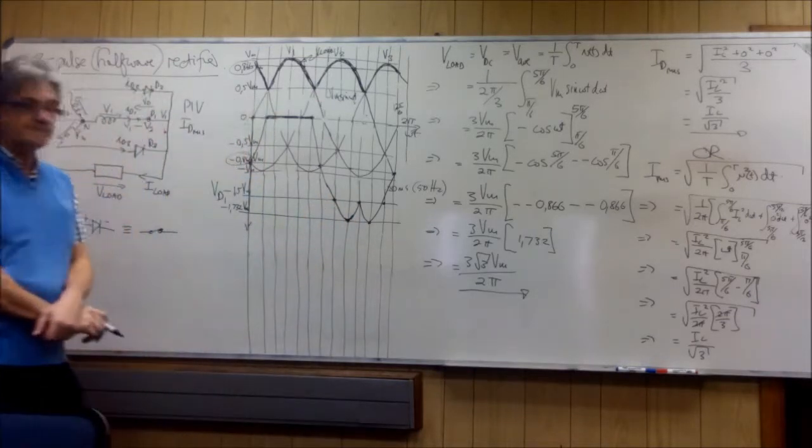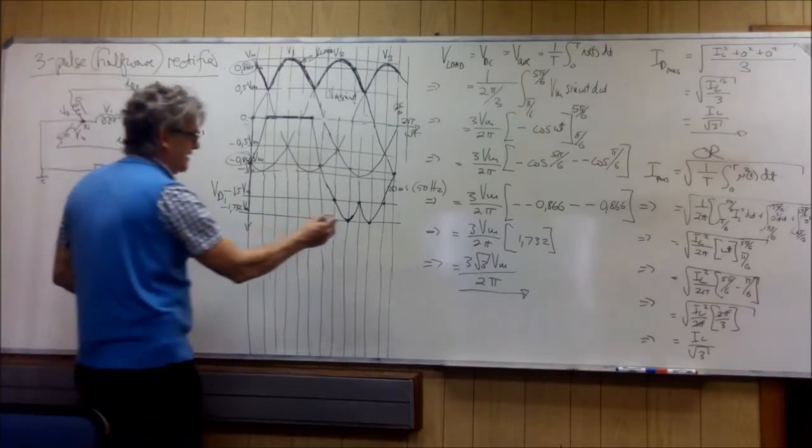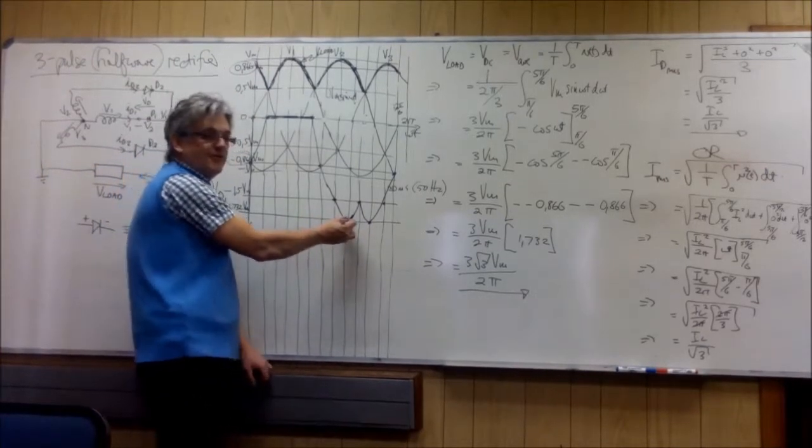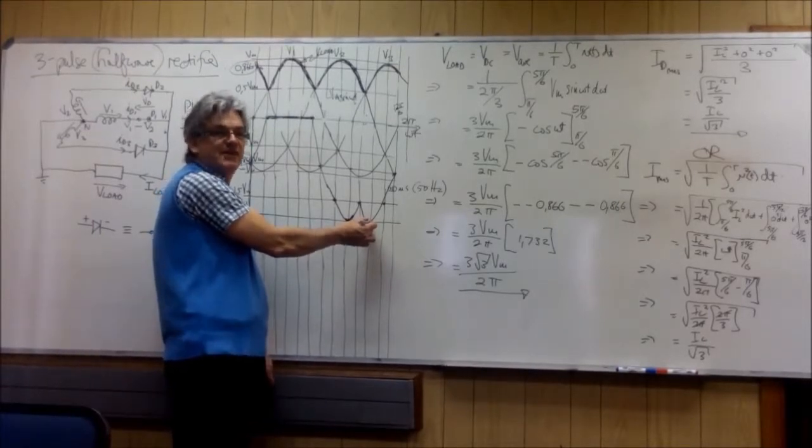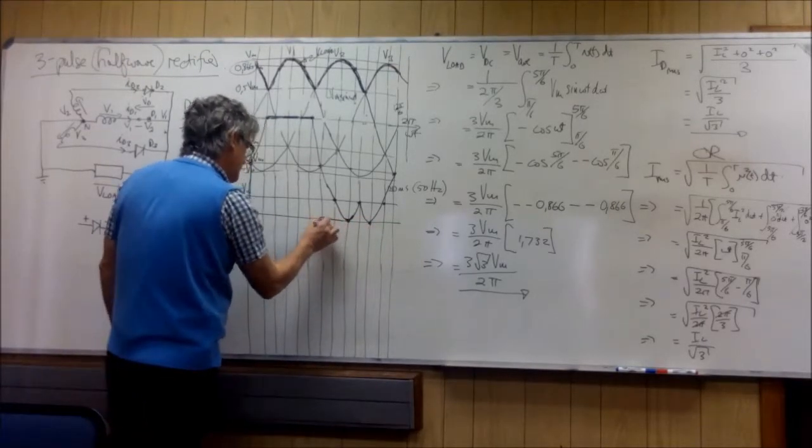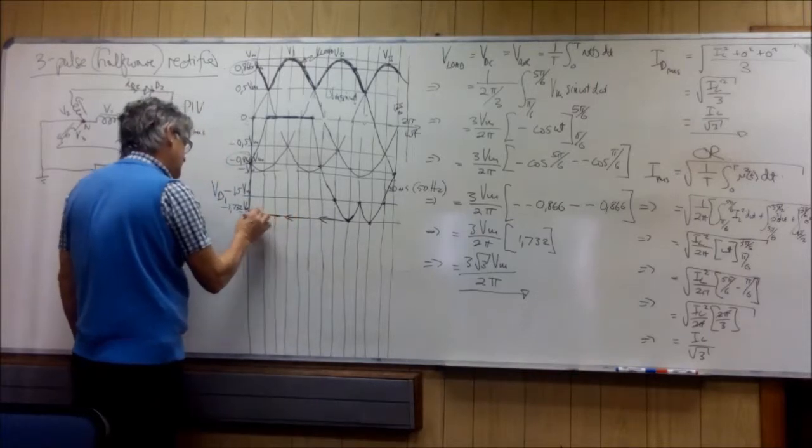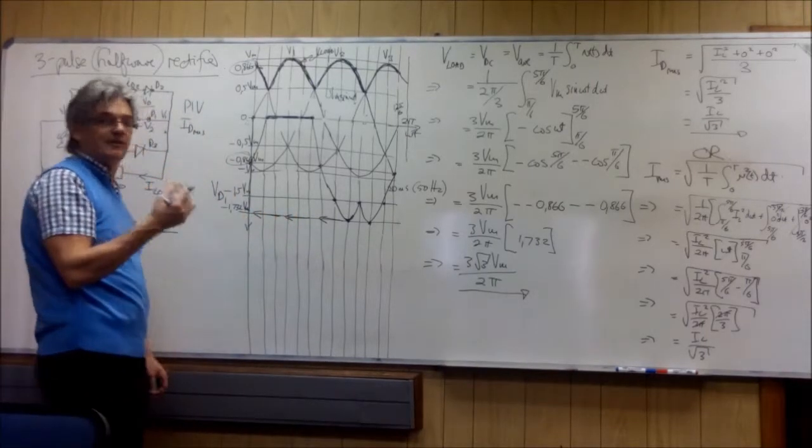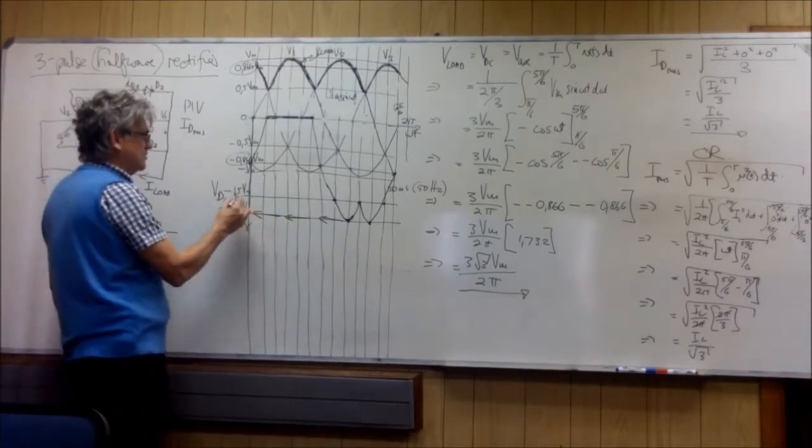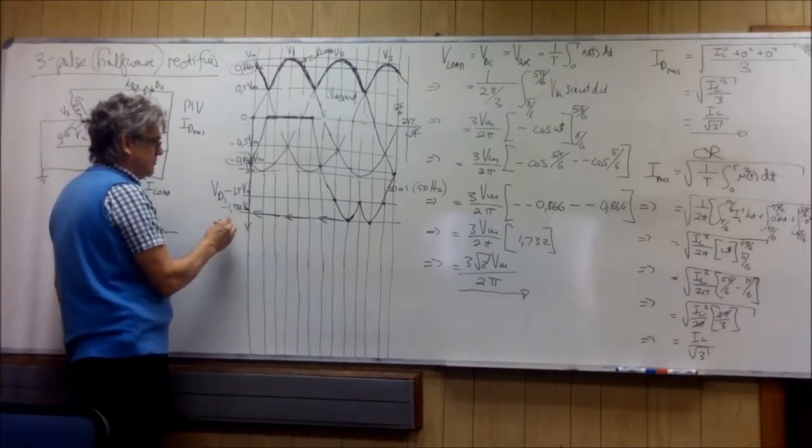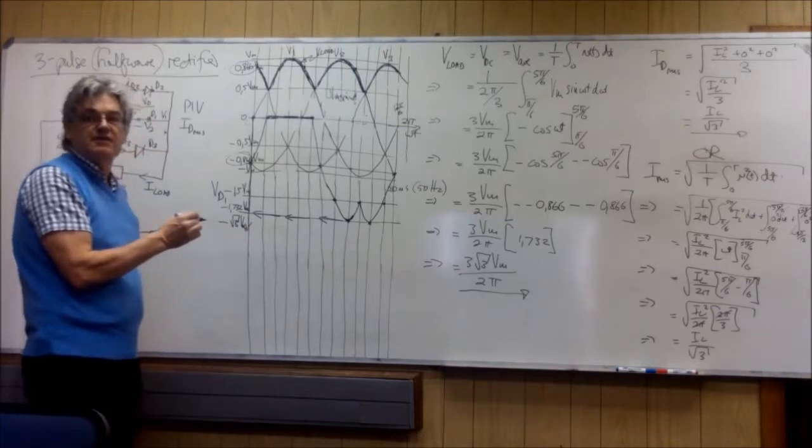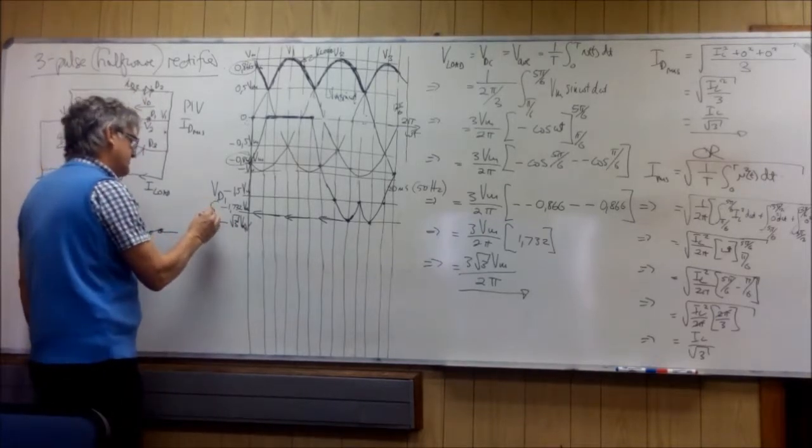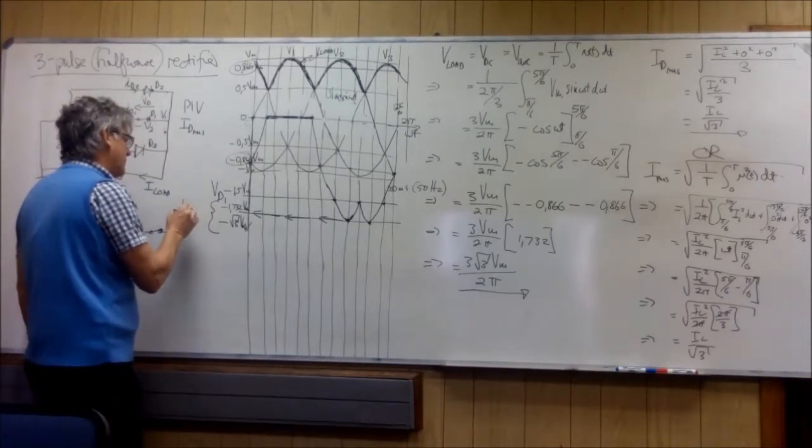So now this is the maximum voltage that the diode will experience in the reverse direction. So then you look in this direction here when it's not on, and you see it's minus 1.732, which is equal to minus the square root of 3 times Vmax, which is a line voltage. Do you agree?